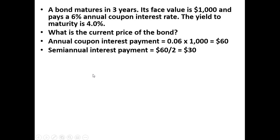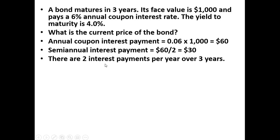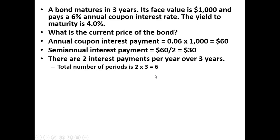On a semi-annual basis, however, we're going to split this $60 into two payments. So a person will receive $30 at the end of six months and another $30 at the end of the next six months. There are two interest payments per year over this three-year period, so the total number of periods is going to be two times three, or six periods.